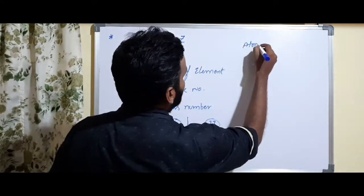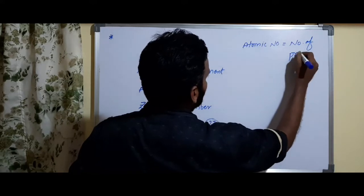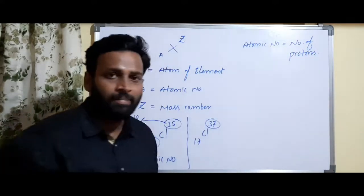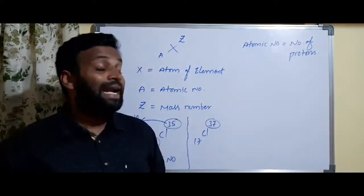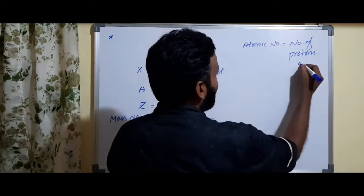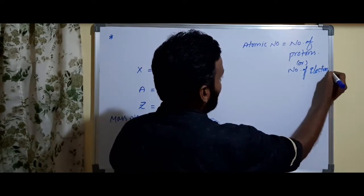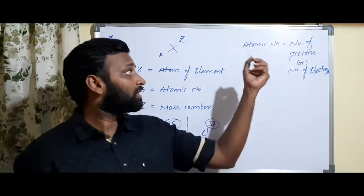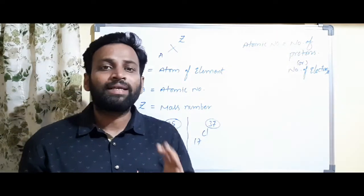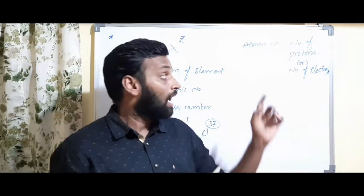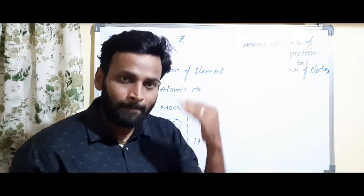Now, what exactly is atomic number? Atomic number is nothing but the number of protons for any particular element — how many protons are present equals the atomic number. Atomic number can also equal the number of electrons, but only when the atom is neutral. Atomic number will never change for a particular ion either — that is why atomic number equals number of protons.